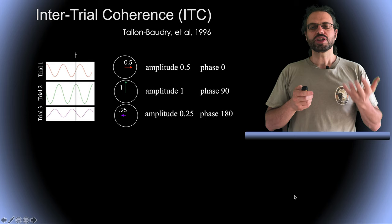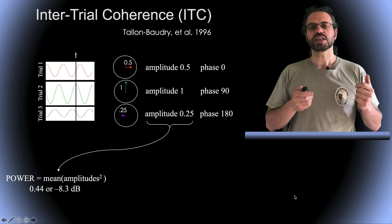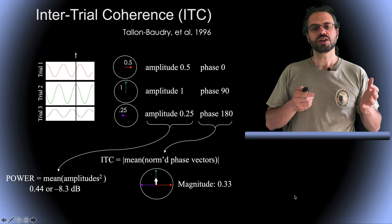Computing spectral power consists in taking the average of the square of the vector length or vector amplitude and we've done that before. Now what is new here is that we can also ignore the amplitude information and simply average three vectors of length 1, so average the normalized phase vectors.